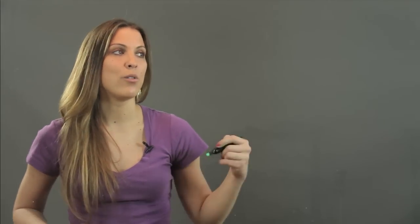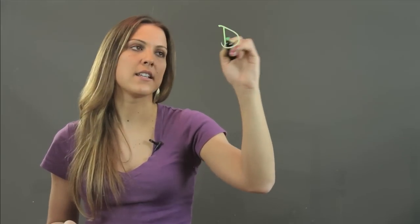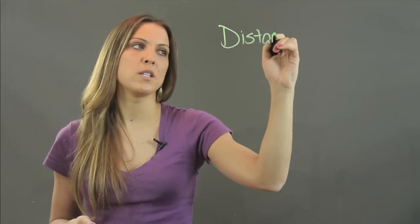Scientific notation is a way to express really big or really small numbers, and its purpose is really just convenience, mostly in the field of science. When you're measuring things like the distance between planets,